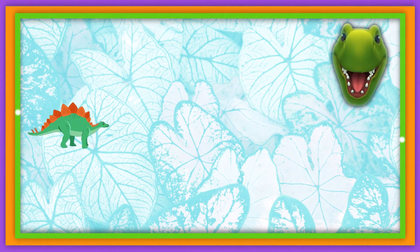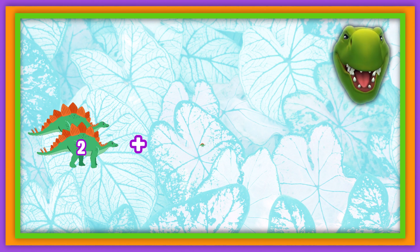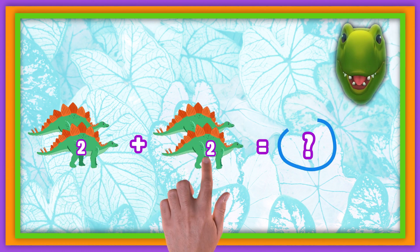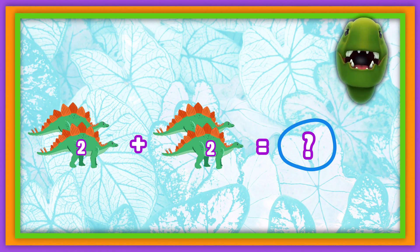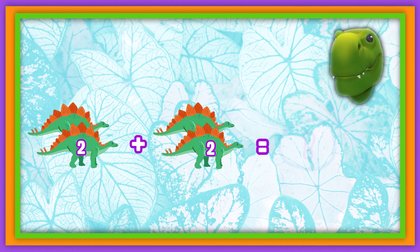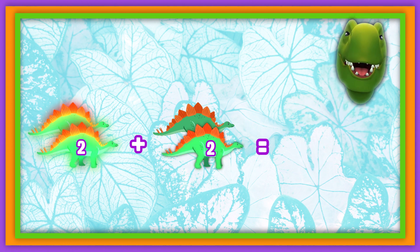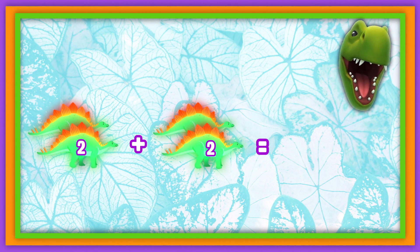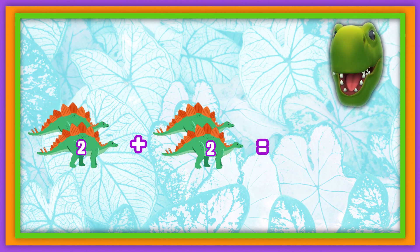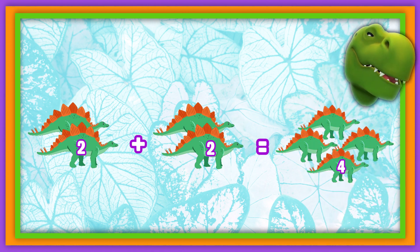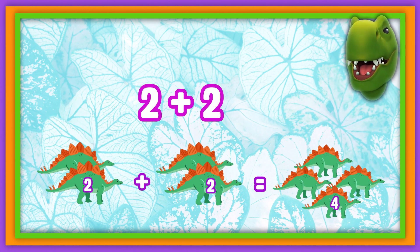Now let's add these dinosaurs. We have two plus two. Let's count and see how many we have all together. One, two, three, four. The answer is four dinos. Two plus two equals four.